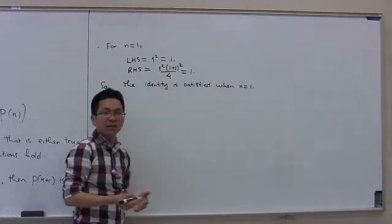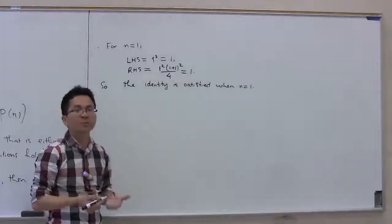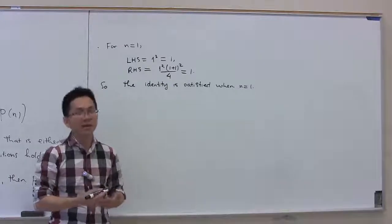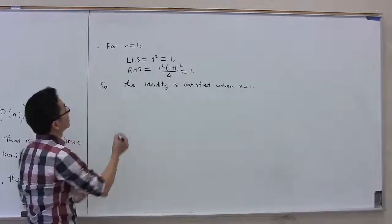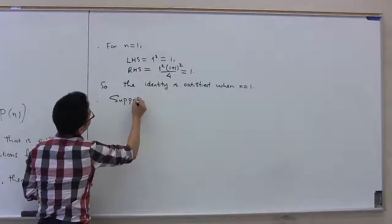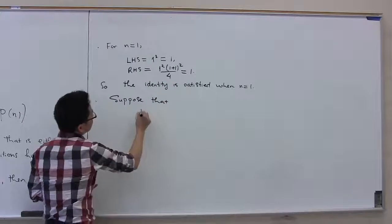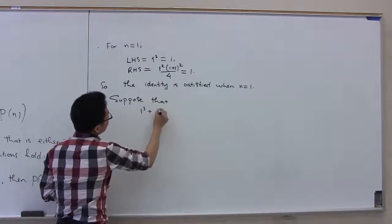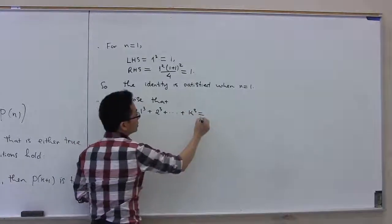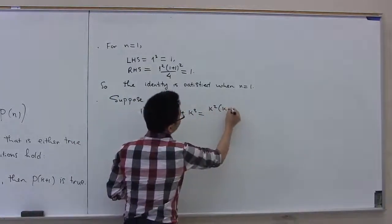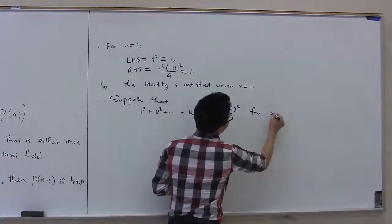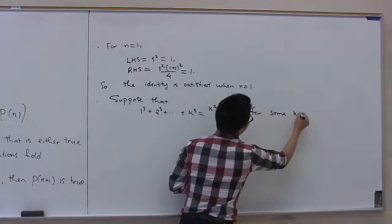This is often called the base case. Now let's move to the next step, called the inductive step. In the inductive step, we suppose that P(k) is satisfied — that is, 1 to the third plus 2 to the third plus so on plus k to the third is equal to k squared times (k plus 1) squared over 4, and this is true for some positive integer k.